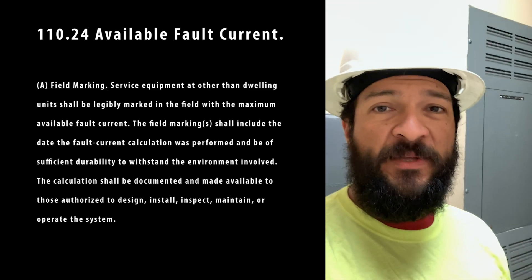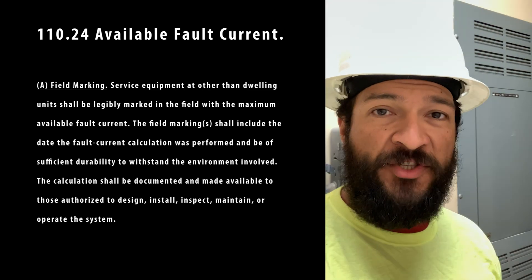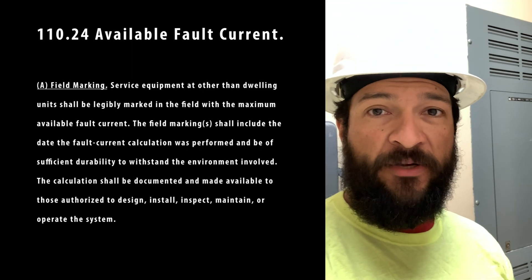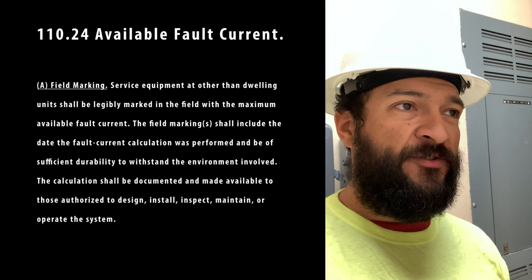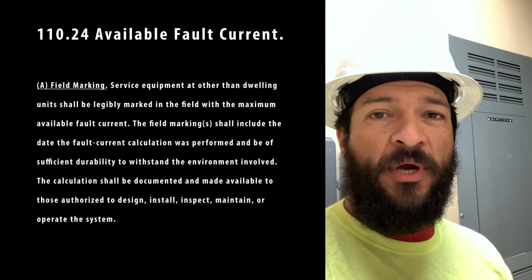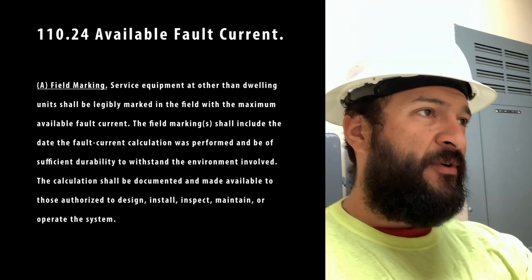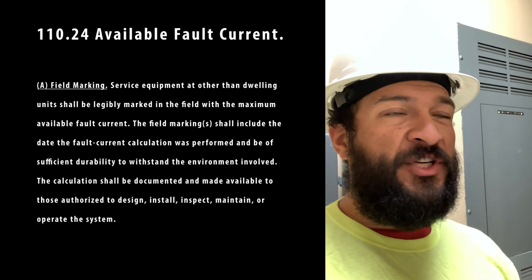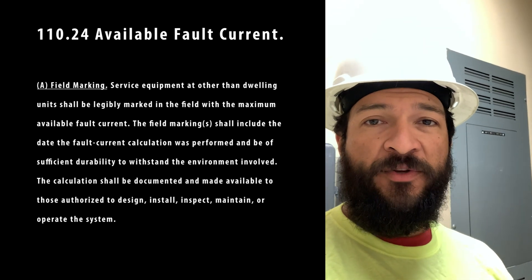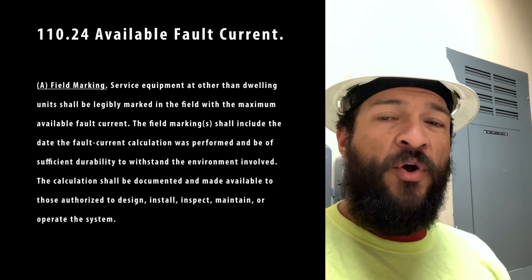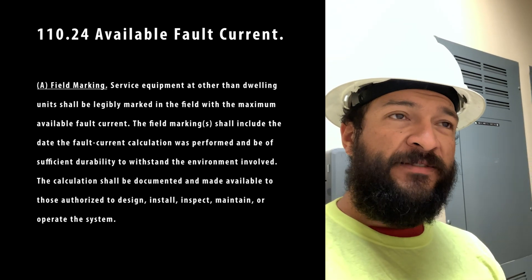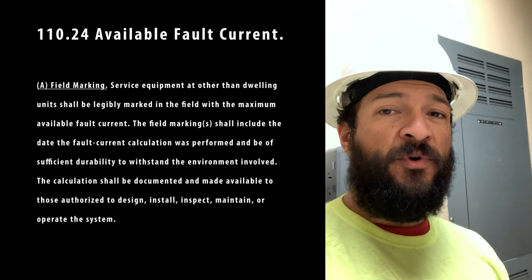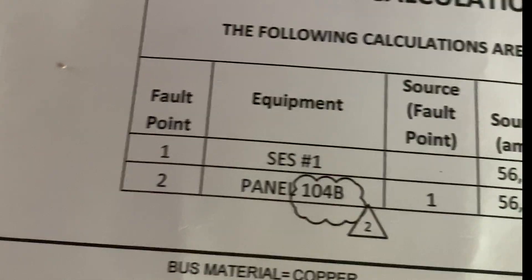Now one of the common things that happens is at the end of the job you're going through labeling. The inspectors are going to want to make sure that all your equipment is labeled properly. They're going to have a checklist of what they want to go through and make sure that you have. One of the things that isn't always checked but it is a requirement is available fault current.